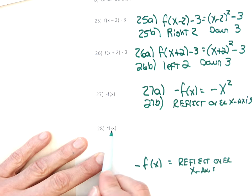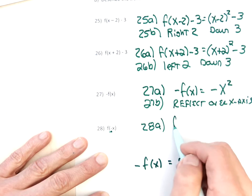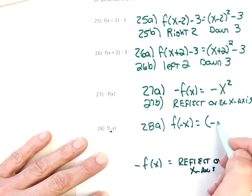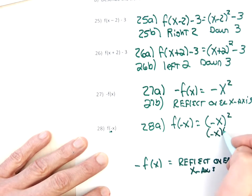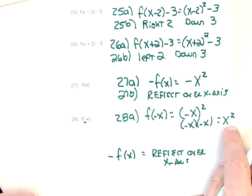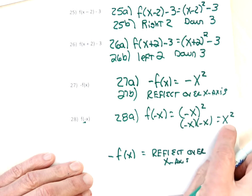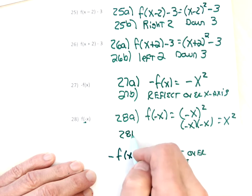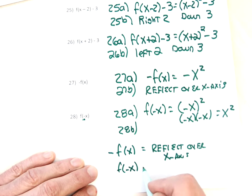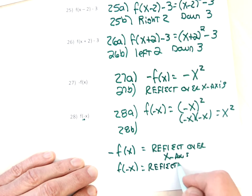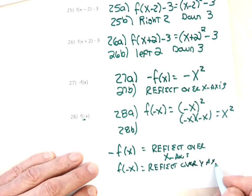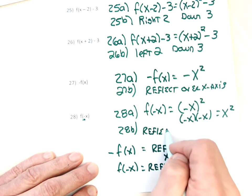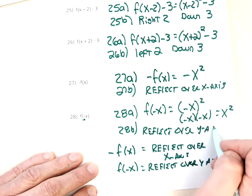For problem 28, because the negative x is inside the parenthesis, I need to put that negative inside a parenthesis with the square outside of it: (-x)². It turns out that negative x squared means negative x times negative x, which equals x squared. I don't put reflection over the y-axis on the test, but both answers are acceptable. For part B, negatives inside parentheses reflect over the y-axis.